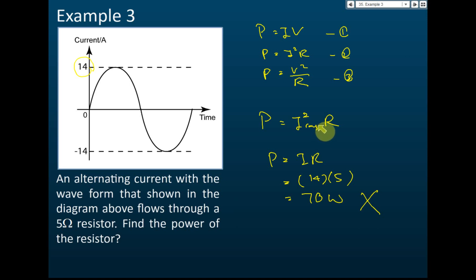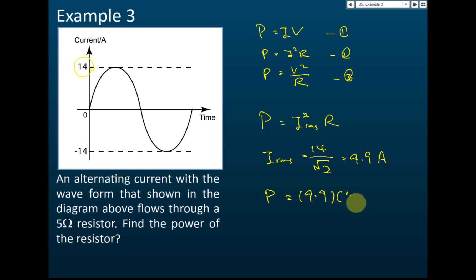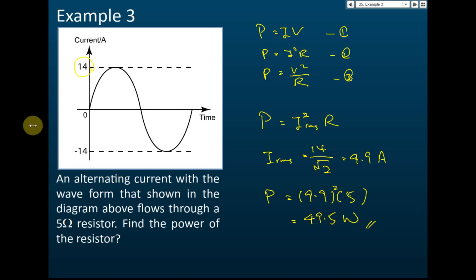To find the power, first find the root mean square current: I_rms equals 14 divided by root 2, which equals 9.9 ampere. Therefore, the power P equals I_rms² times R equals 9.9² times 5, giving approximately 490 watts.